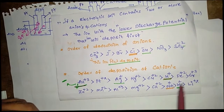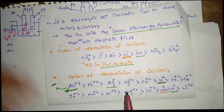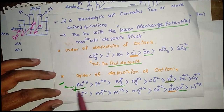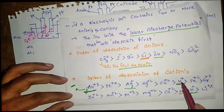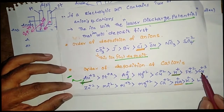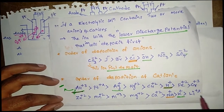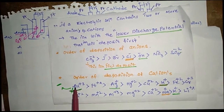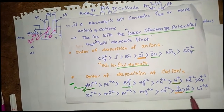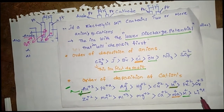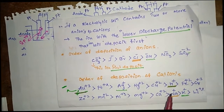The full cation series from lower to higher discharge potential is: Rh³⁺, platinum, Hg⁺, Ag⁺, Hg²⁺, Cu²⁺, H⁺, Fe²⁺, Cr³⁺, Zn²⁺, Mn²⁺, Al³⁺, Mg²⁺, Ca²⁺, Na⁺, K⁺, Li⁺. Rh³⁺ has the lowest discharge potential and can easily deposit on the cathode, while lithium has the highest discharge potential and is not easily deposited.